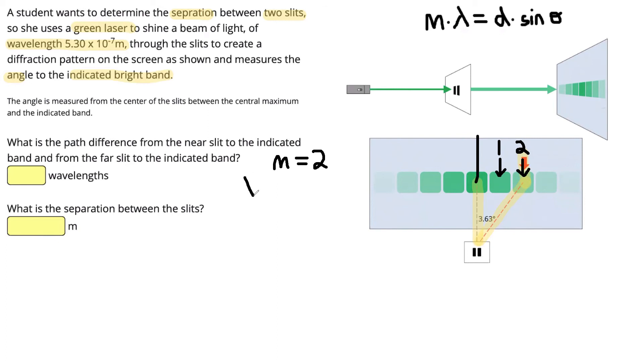We're also given lambda, the wavelength of the light: 5.30 times 10 to the negative 7. And we're also given the angle here to that second order maxima. So that's our theta, 3.63 degrees. The unknown variable that we are left to find is D, the separation between the slits.